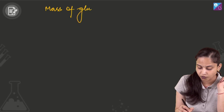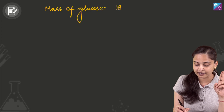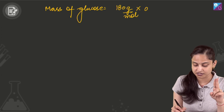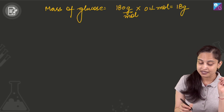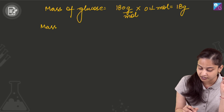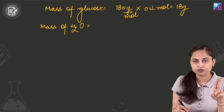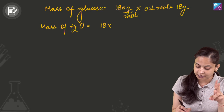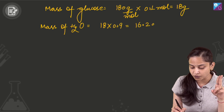What will be the mass of glucose? Mass of glucose equals molar mass, which is 180 gram per mole, multiplied by the number of moles, 0.1 mole — comes out to be 18 grams. Similarly, mass of water equals molar mass 18 multiplied by number of moles 0.9, which comes out to be 16.2 grams.